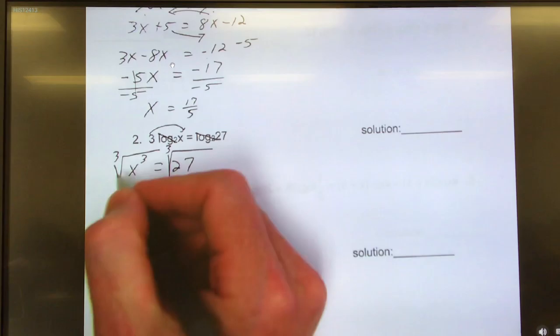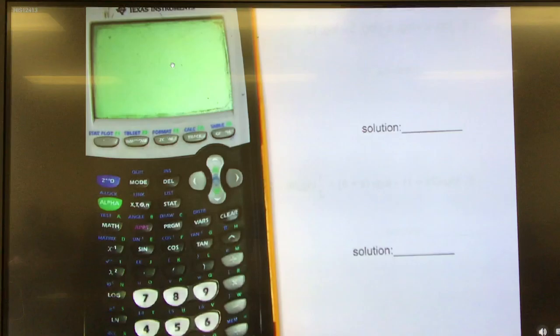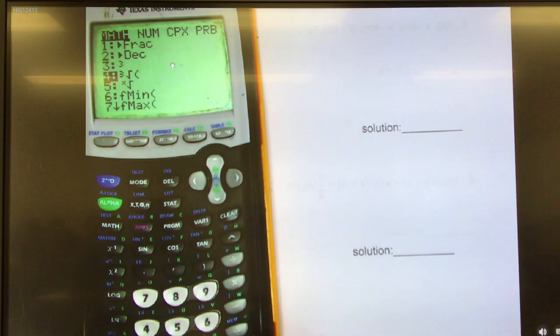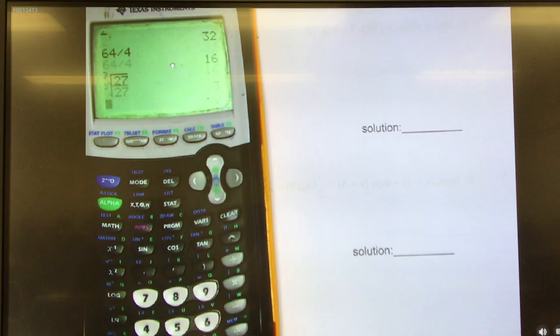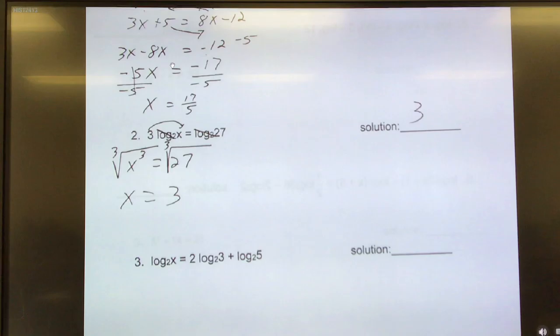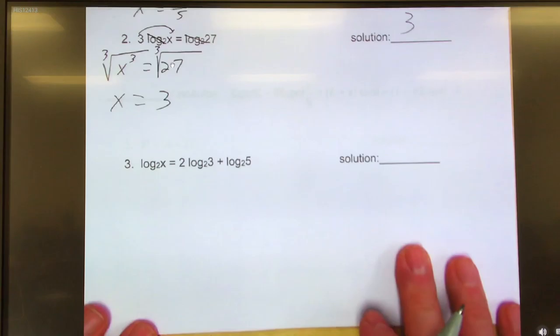So on this one, I'm going to cube root it. When I cube root x to the third, it leaves me x equals, take my calculator, math, and I go down to that one already has a cube root built in for me, so I'll just use the pre-built one. 27, hit enter, 3. Too easy.